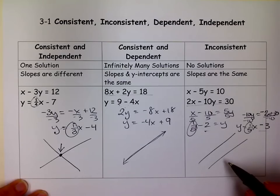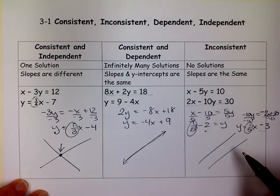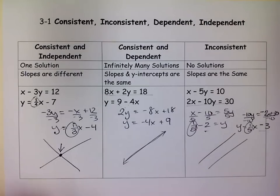Because remember, the solution of a system is where the two graphs intersect. So we call this inconsistent. So hopefully that helps you figure out what your systems are. Good luck with that. M squared, signing out.